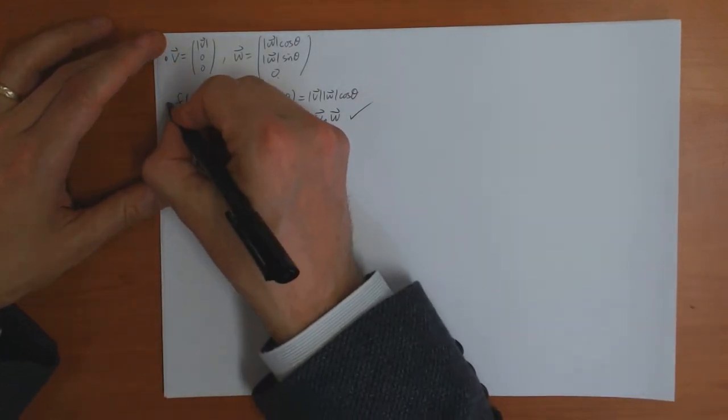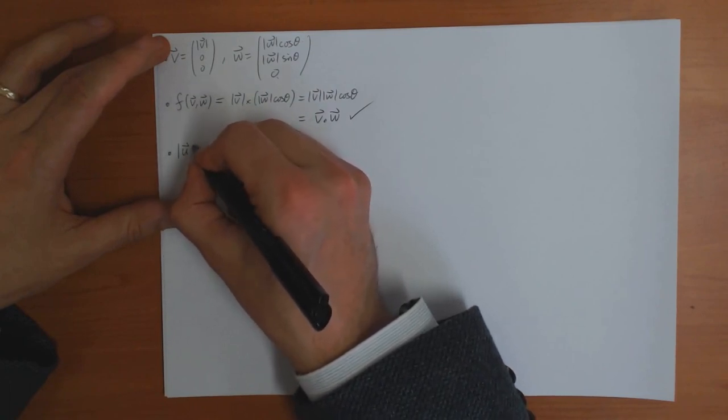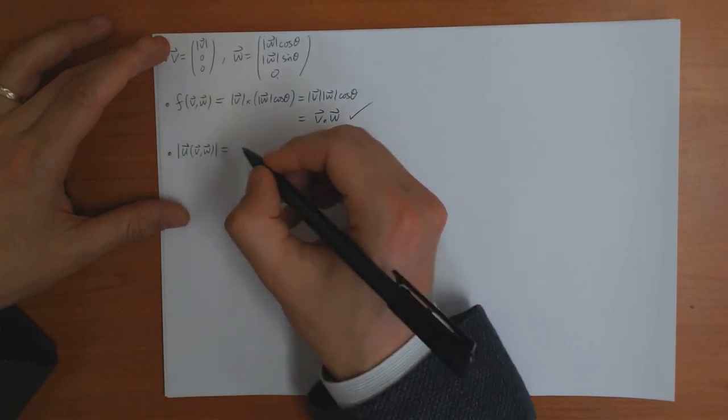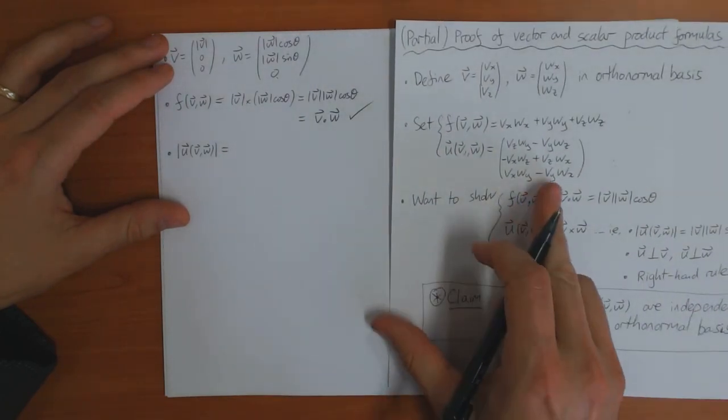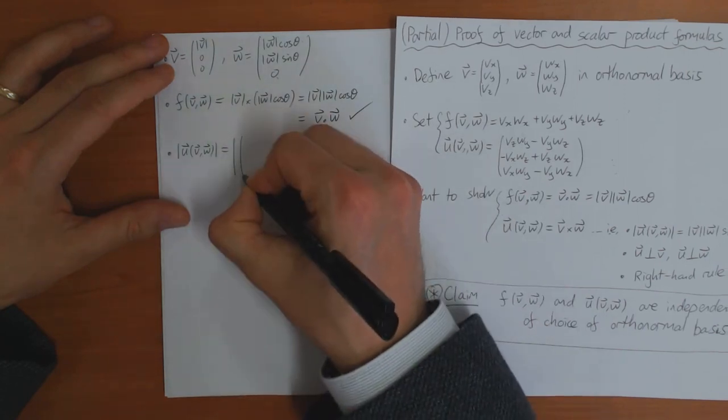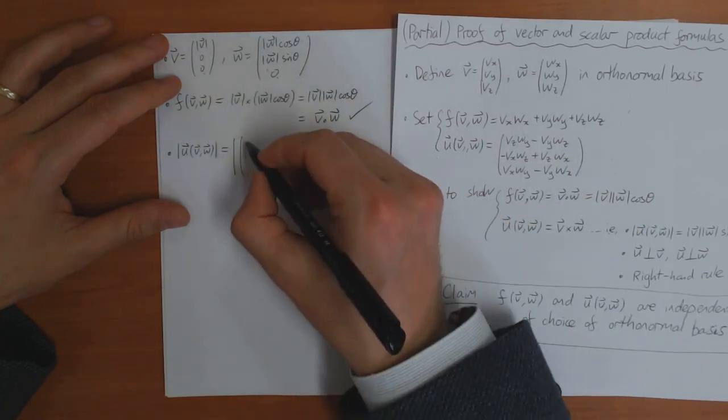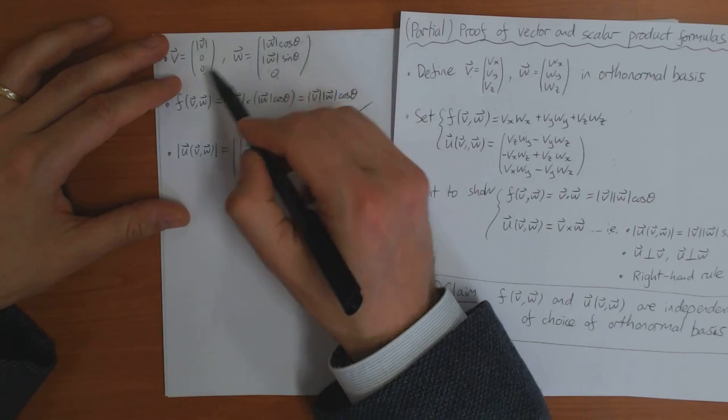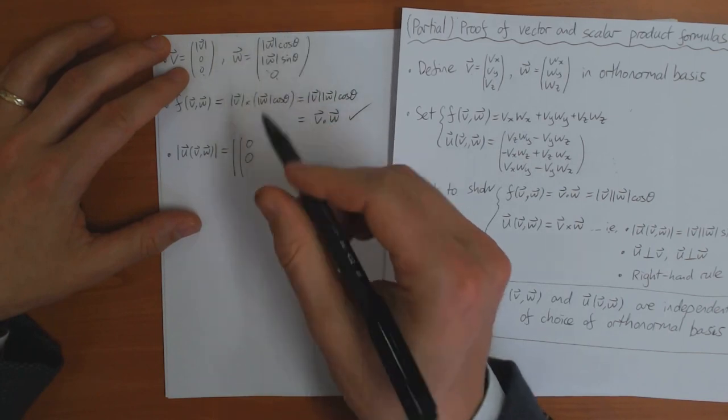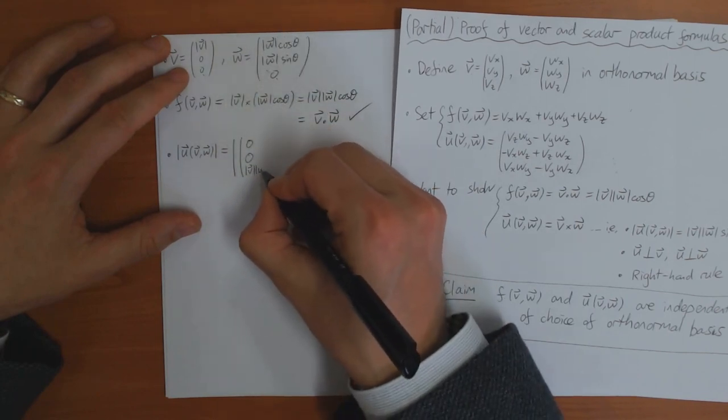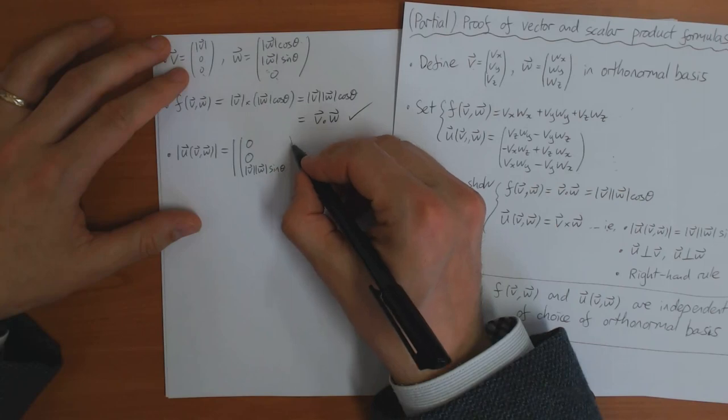Second one is a bit more hard. Let's look at the length first. So the length of u of v, w. So let me bring down the definition of u again here. So this is the length of the vector. So here I've got vz wy minus vy wz, that's zero. Here I've got this, which is also zero. And here I've got vx wy which is that times that, minus vy wx which is also zero.